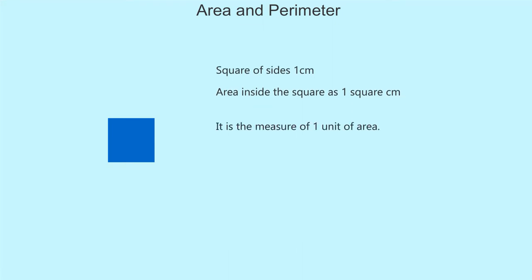Look at the square of sides 1 centimeter. We define the area inside the square as 1 square centimeter. It is the measure of 1 unit of area. Similarly, we can have square feet or square meter as well.